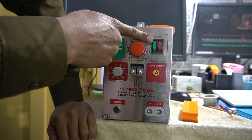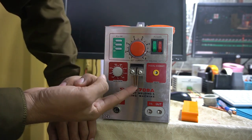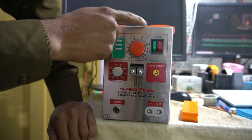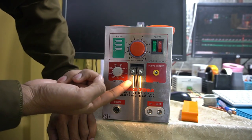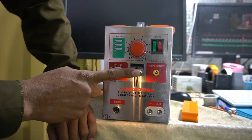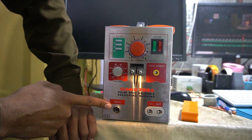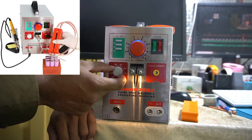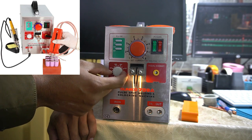First, we have two power buttons here where we activate the pulse and the soldering iron. As I press the green button, the lights are on, which means it is ready for spot welding. After this button, the soldering iron will be activated.